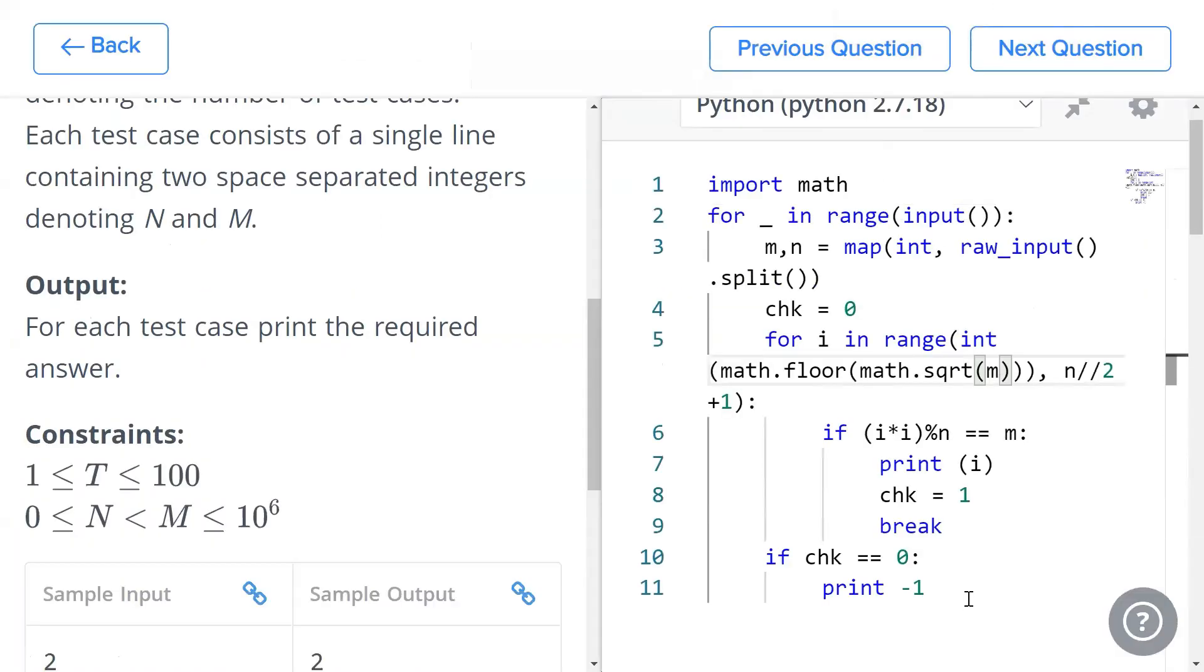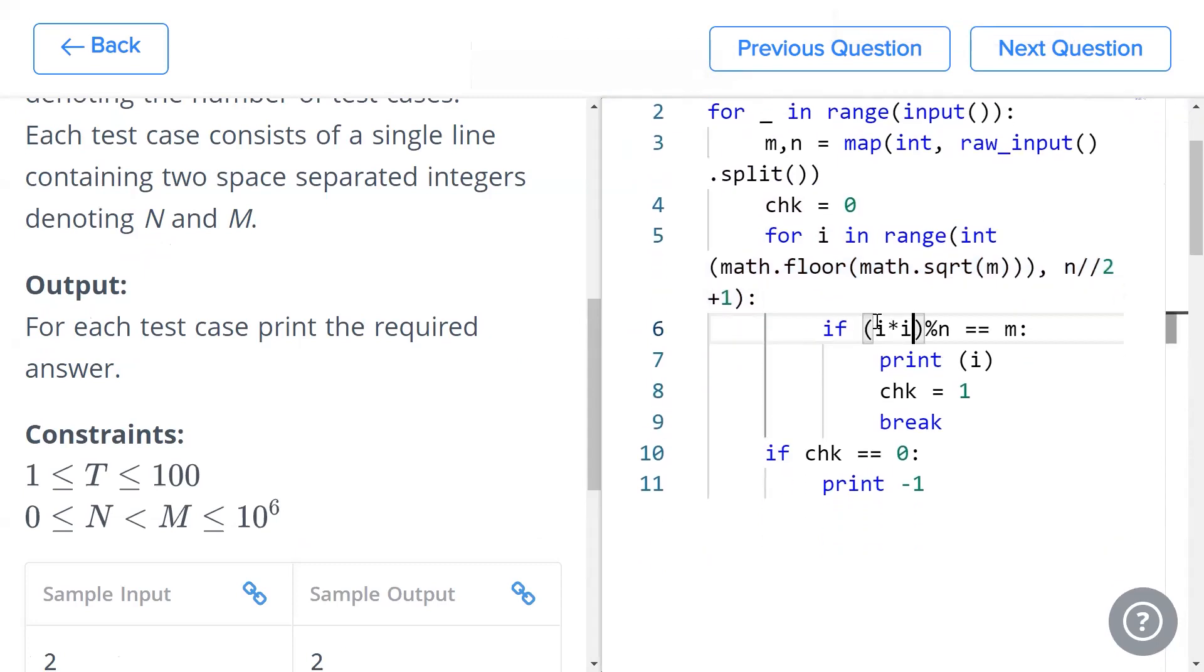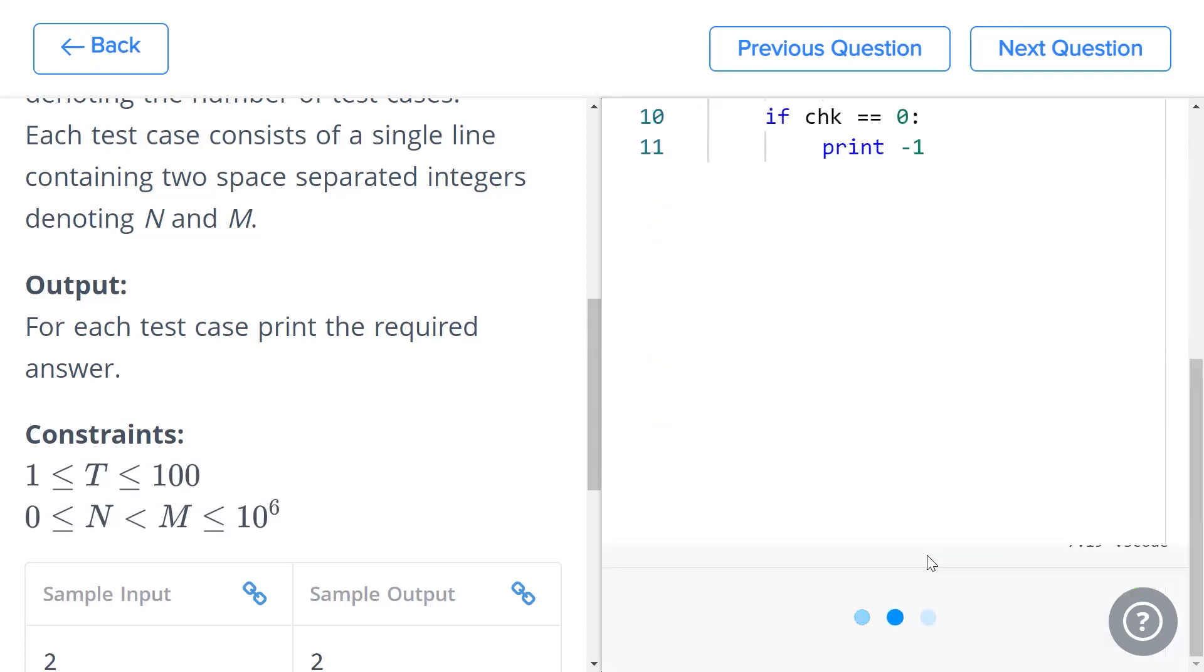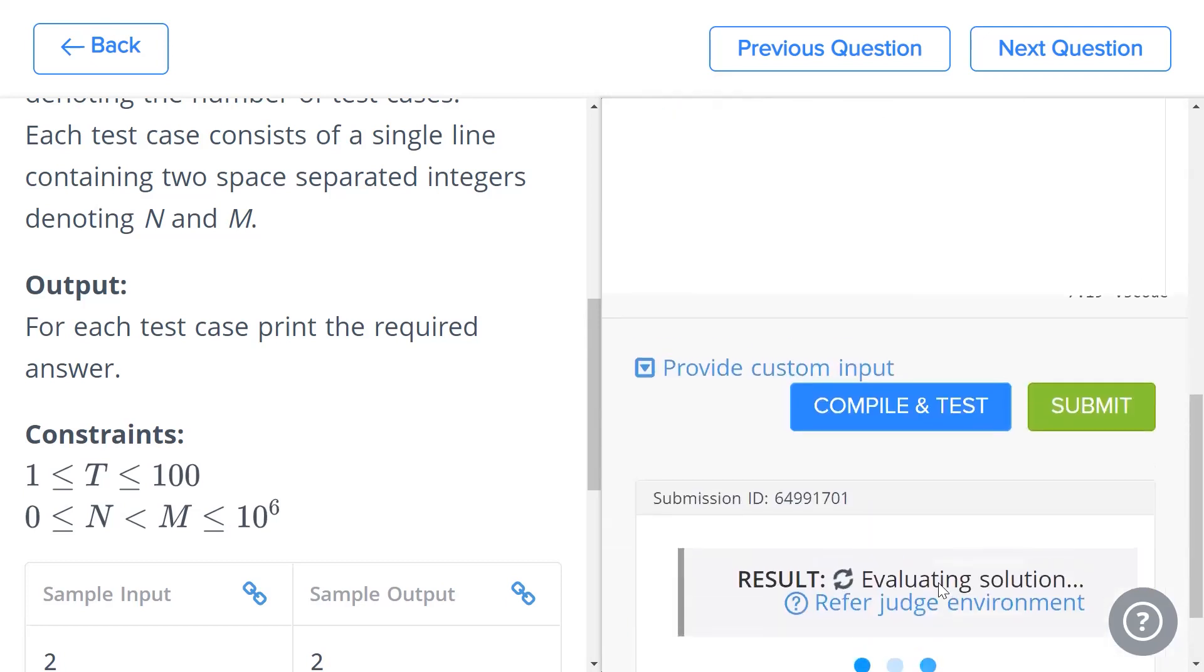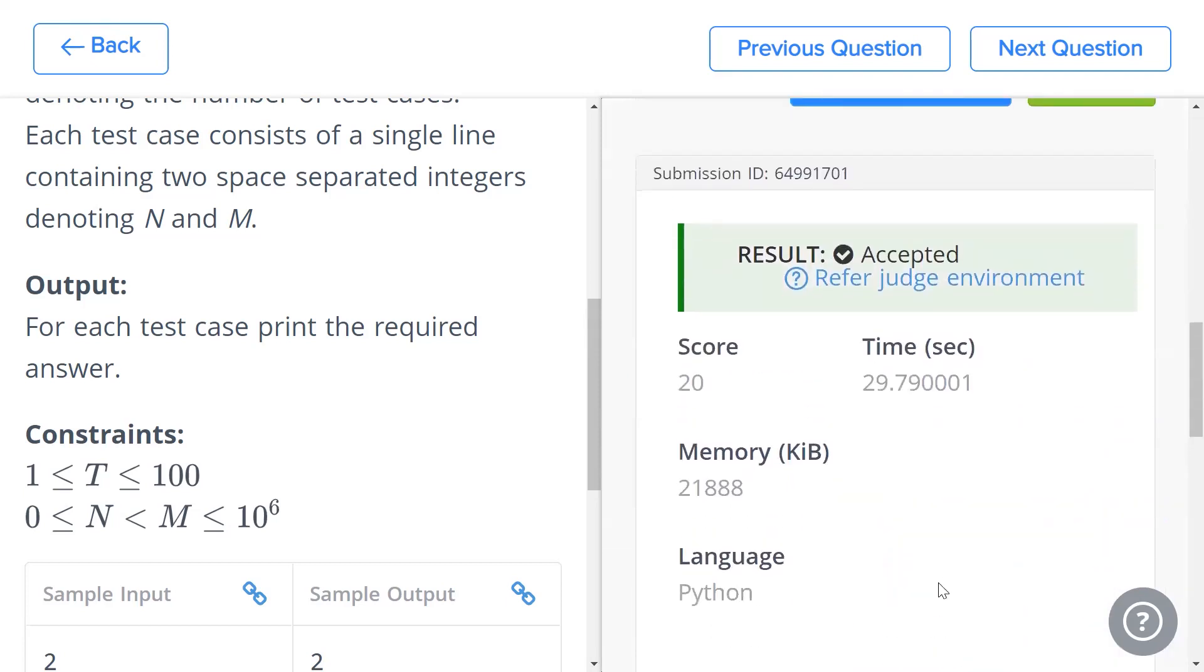All that's left to do is to have a look at the code. We simply run a loop from the square root of M. I think I've mixed up M and N in this question. I've swapped them. But we run a loop from the square root of M to N/2 + 1. If i² % N equals M, all we do is print i and we end all our iterations. We break. If we have never encountered that i value, that means no such number exists. So we simply print -1. Once we hit compile, once we hit test, it works and submit is going to give us a pretty favorable result as well. As you can see right here.